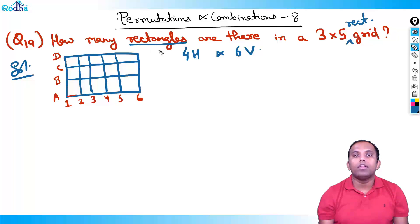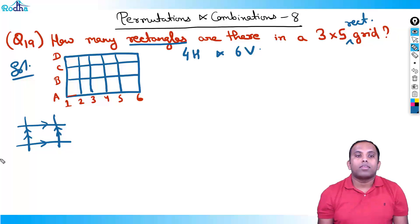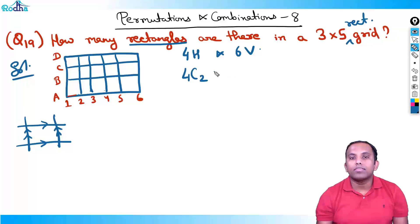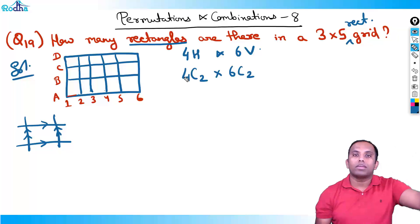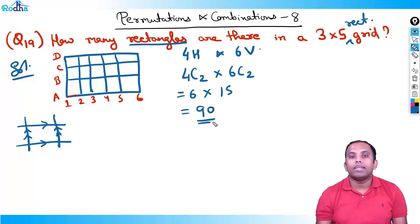A rectangle is always formed by selecting any 2 parallel horizontal lines and any 2 parallel vertical lines. If there are 4 horizontal lines, you can select any 2 in 4C2 ways. If there are 6 vertical lines, you can select any 2 in 6C2 ways. Both events happen one after the other, so the answer is 4C2 × 6C2. That gives 6 × 15 = 90 rectangles.